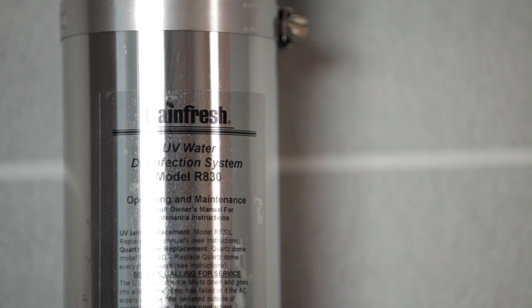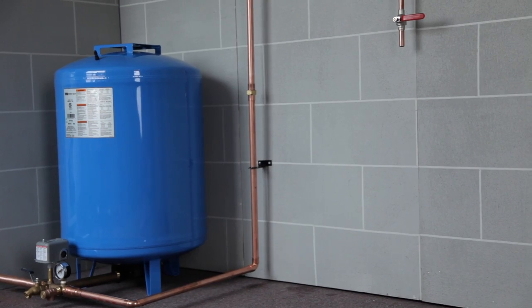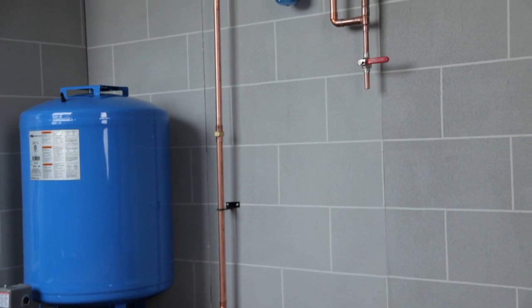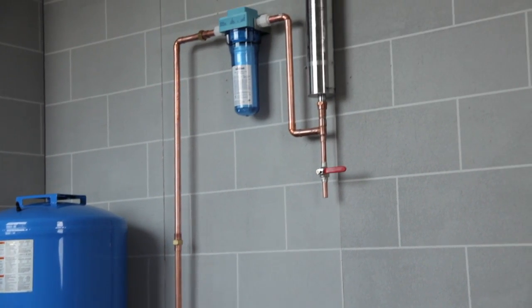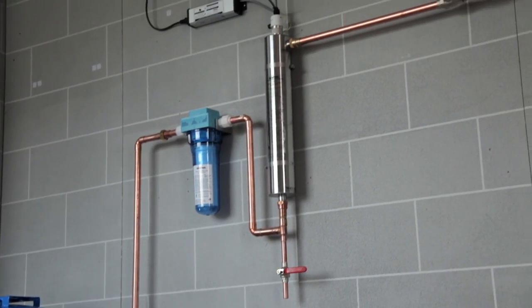Rainfresh UV System is economical, compact, environmentally friendly, and easily installed in less than 90 minutes on the main water line, after your pressure tank and sediment filter.